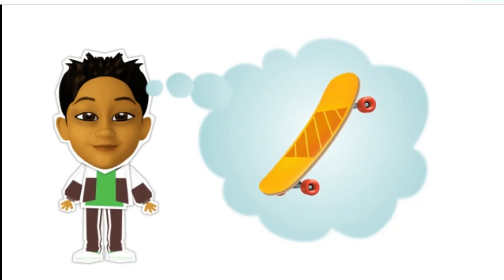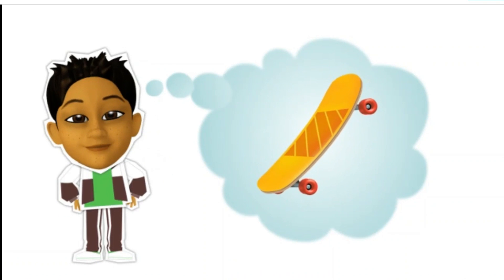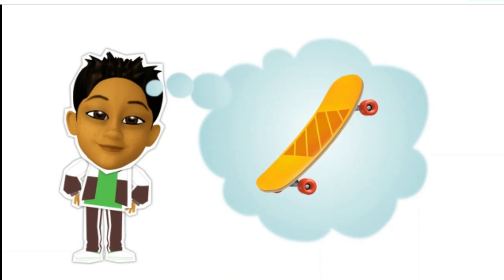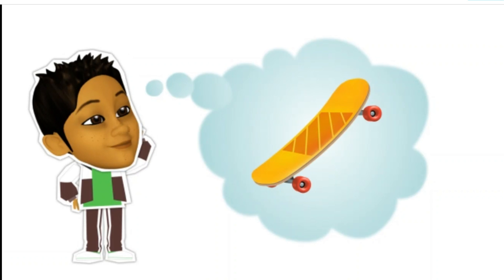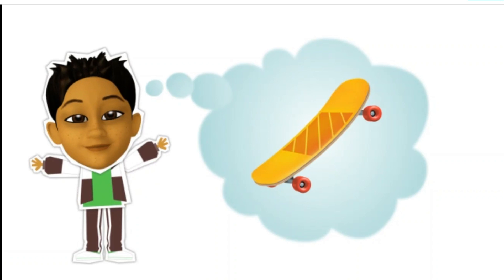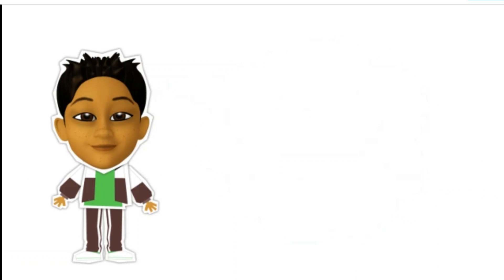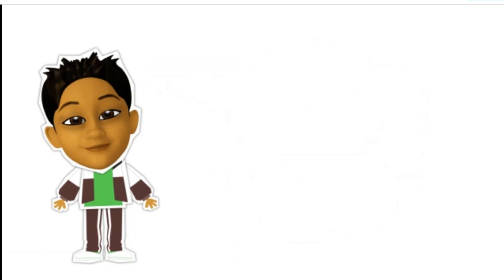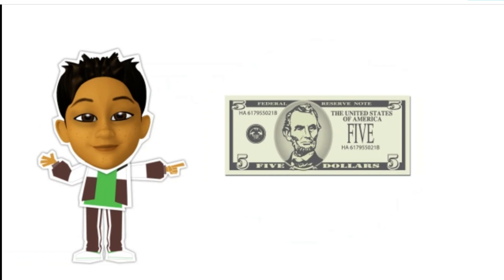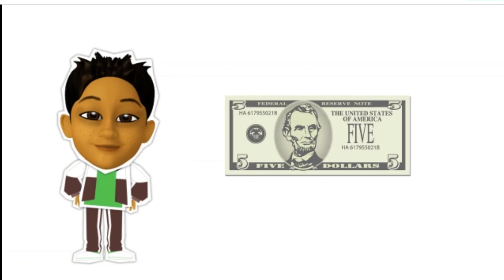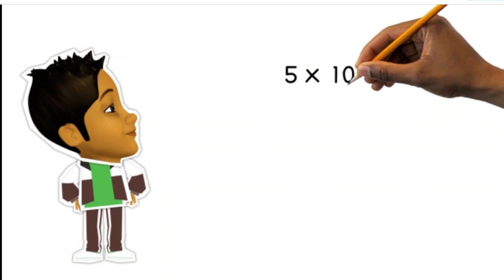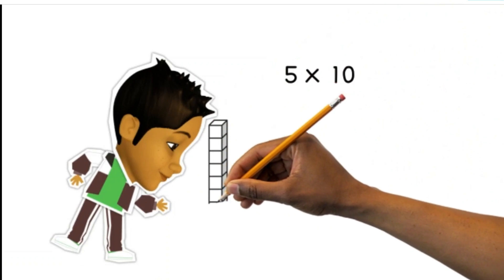Hey Carlos, I hear you're planning on saving up for a skateboard. Let's work through a math problem using multiples of 10 to see how much you can save in 10 weeks. Sounds great! What is your allowance per week? It's only $5. Okay, let's work with that. Let's use place value blocks to model the problem.